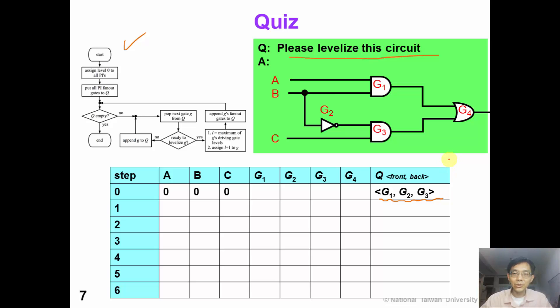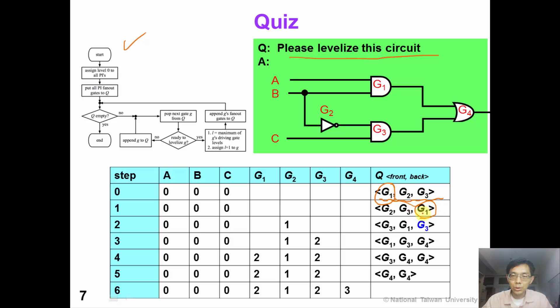Okay, are you finished? Now let's check our answer. First, we pop out gate G1. However, G1 is not ready for evaluation. So we append G1 back to the queue again.